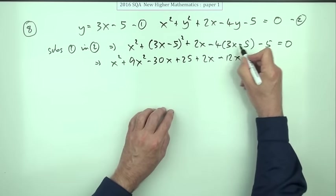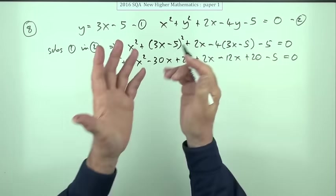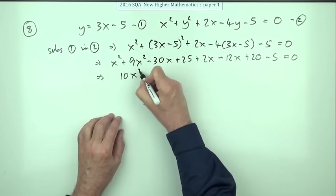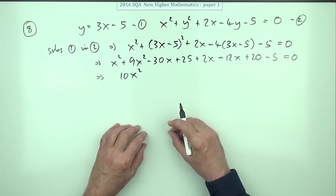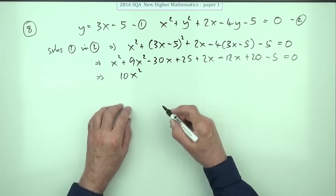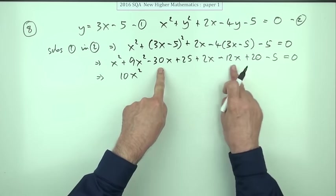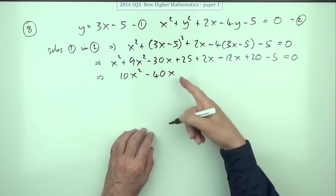Gather it all up into our little quadratic. 10. Now if it is a tangent, you know you're looking for a perfect square. So I want tens in the rest of it. So I've got minus 30 and that's a minus 10, so that's minus 40x.